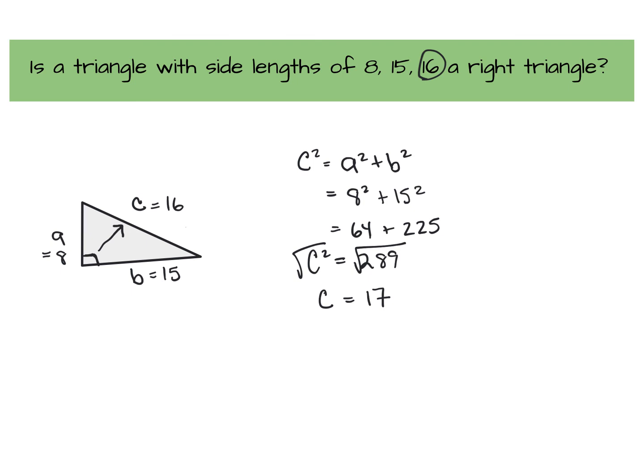All right, so let's go back and see what information they gave us. They said side length of 16. And we know, using Pythagorean theorem, if it's a right angle triangle, C would need to be 17. And because those two aren't equal, this is not a right angle triangle.